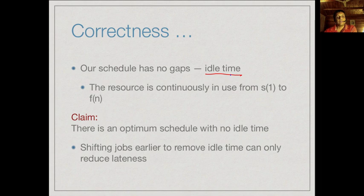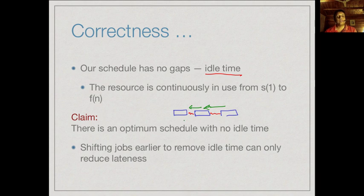The claim is that there is an optimum schedule which has no idle time. Suppose you had an optimal schedule with gaps where the resource was idle. We can shift those blocks forward because there is no constraint on when we schedule things — only on when they should finish. By moving things earlier, we can only reduce lateness. So we can always assume the optimum schedule has no idle time.